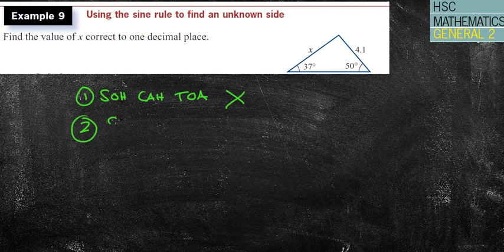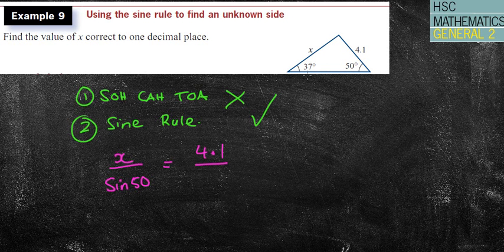The second rule I look for is the sine rule, which means I'm going to have two sides and their opposite angles. So I've got x and 50, yes. 4.1 and 37, yes. Therefore, sine rule works. Woo-hoo! They're right. So now I can go through my rule. My rule says one side over the sine of its opposite angle is equal to another side, 4.1, over its opposite angle with sine attached to it.